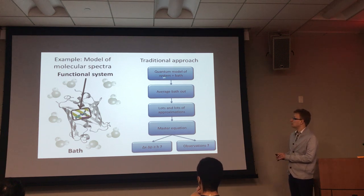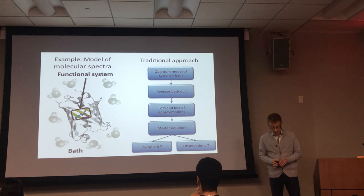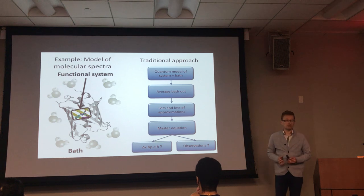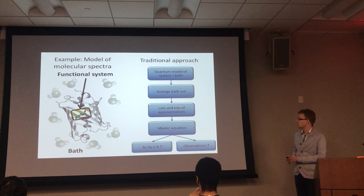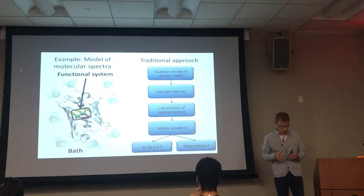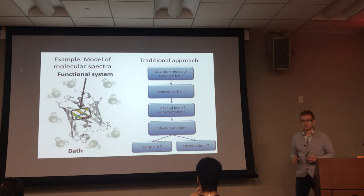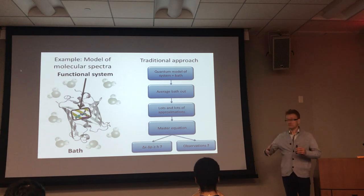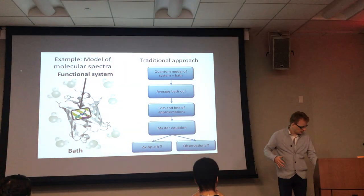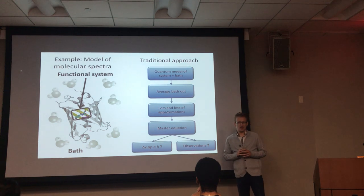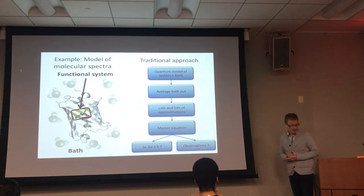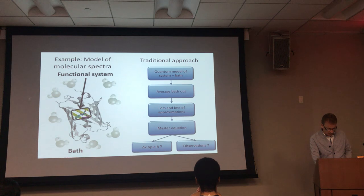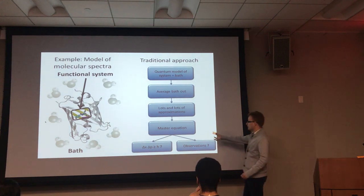This is done by averaging out the original large system. Two things happen when you average out. First, you need to use many approximations. There is only one model where averaging out requires no approximations, but unfortunately that model is not physical. There are two types of approximations: some are good and some are bad. The good ones are explicit - you are actually aware of them. The bad ones are implicit: you make an approximation without actually realizing it was an approximation. That's the one you really have to watch out for.